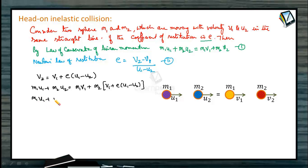m1 u1 plus m2 u2 is equal to m1 v1 plus m2 v1 plus m2 times e times u1 minus m2 times e times u2. So what I will do? I will bring all u1 terms together. So what you get? m1 minus e times m2 into u1 plus 1 plus e times m2 into u2 is equal to m1 plus m2 times v1.